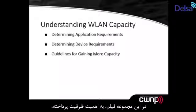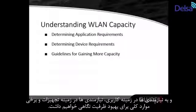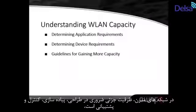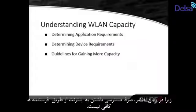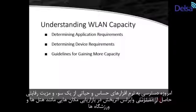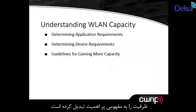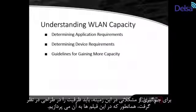Today we're going to be focusing on the importance of capacity, looking at application requirements, device requirements, and some general guidelines for gaining more capacity. It is an essential element of wireless LAN design, implementation, monitoring, and support with modern networks — because we're no longer in an era where we can simply install a few access points and call it done. We're now running critical applications, and marketing wireless access at hotels, arenas, and hospitality areas. When people connect and don't have effective wireless access, they get frustrated. So we have to make sure we've designed for capacity.